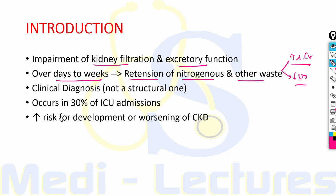AKI is a clinical diagnosis, not a structural one — a patient may have AKI with or without injury to the renal parenchyma. It occurs in around 30 percent of all ICU admissions, which is a huge number, and in all these patients the mortality rate is around 50 percent.